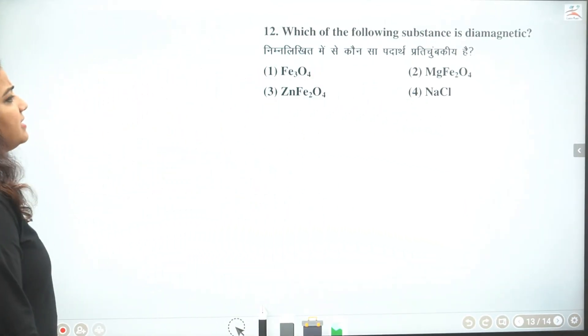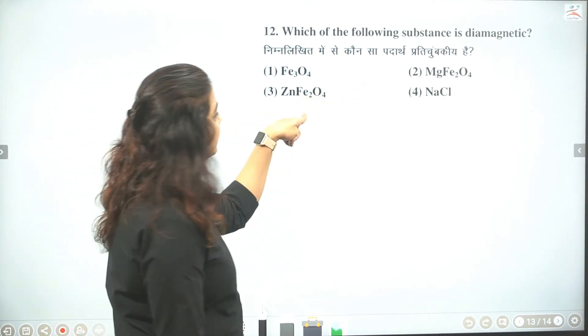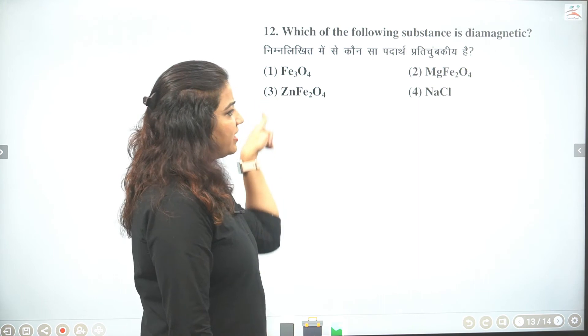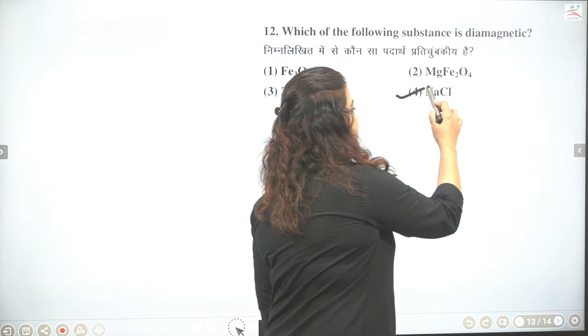Then students which of the following substance is diamagnetic. Toh yeh batao yeh saare ferrite hai. Hai na. Toh yeh jo hai yeh saare ferrimagnetic hai. Ab diamagnetic toh hum kahenge only yeh ek answer hai NaCl.